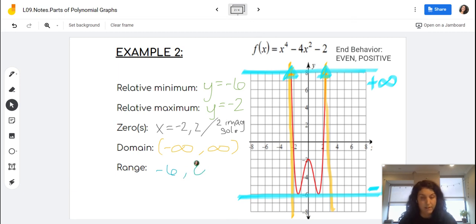The highest value I have is infinity. Parentheses around my infinities always. And then I'm going to put a bracket around my negative 6 because that's included. That is an actual point on my graph that I can plot. It's not an open circle.